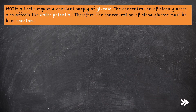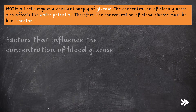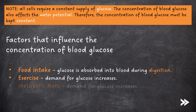Note that all cells require a constant supply of glucose. The concentration of blood glucose also affects the water potential. Therefore, the concentration of blood glucose must be kept constant. The factors that influence the concentration of blood glucose are food intake, exercise and metabolic rate.